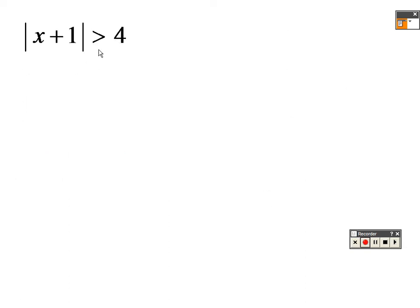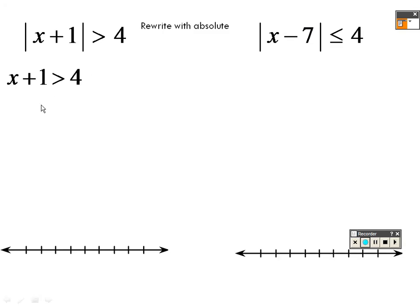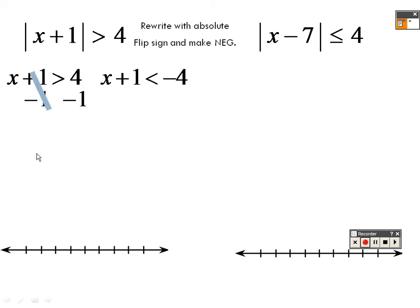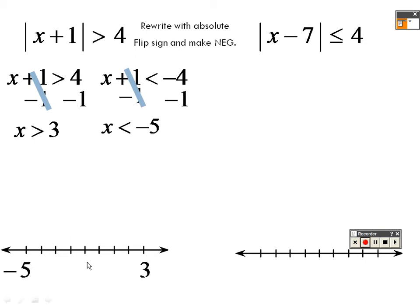When you have greater than, write down exactly what you got, then write it again but flip the sign and make it negative. Minus 1 on both sides gives x is greater than 3; minus 1 on both sides of the other gives x is less than negative 5. So there's an open hole at 3 and an open hole at negative 5, with everything going outward in both directions.